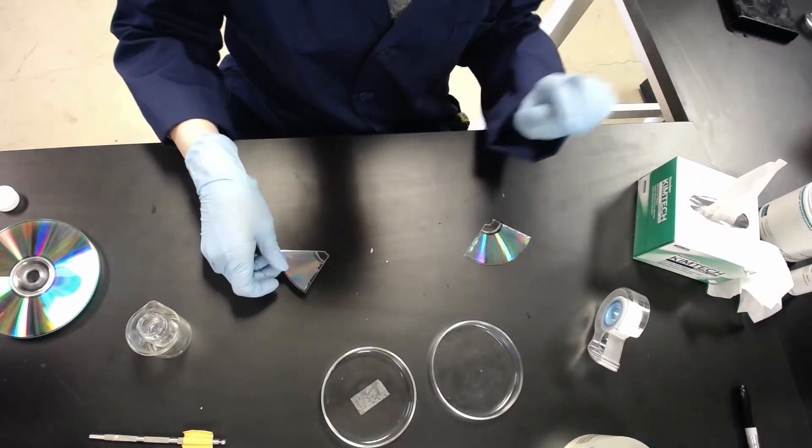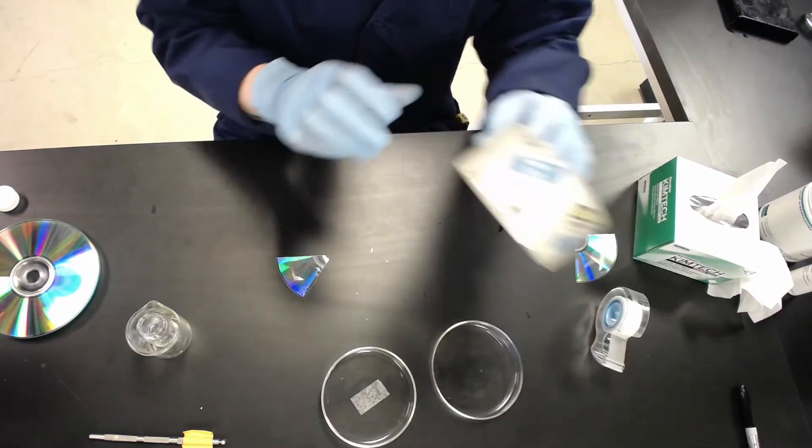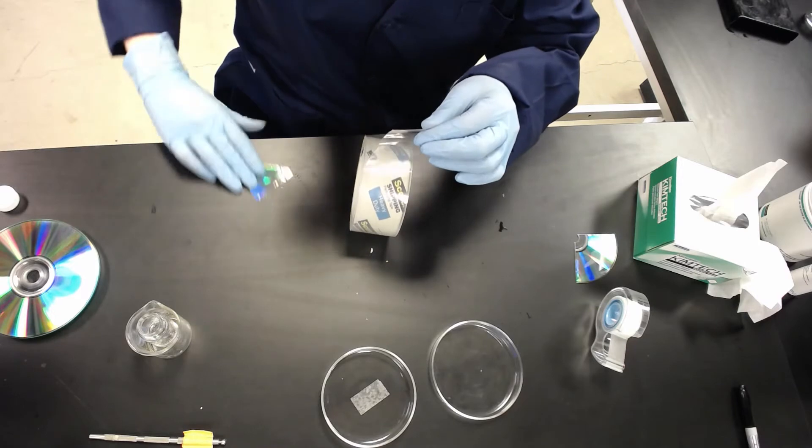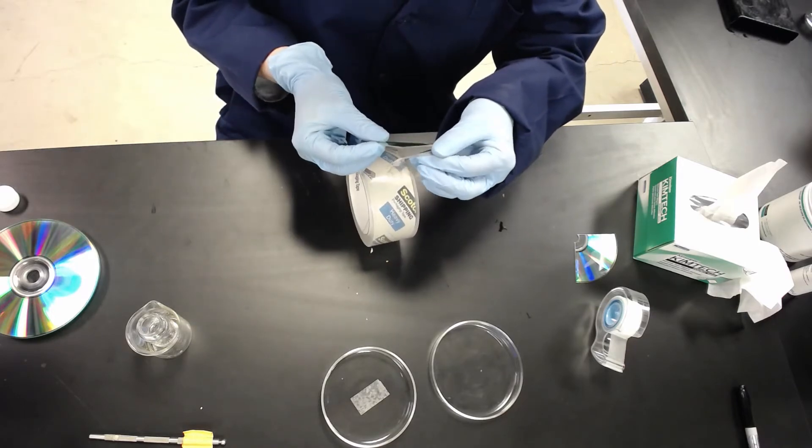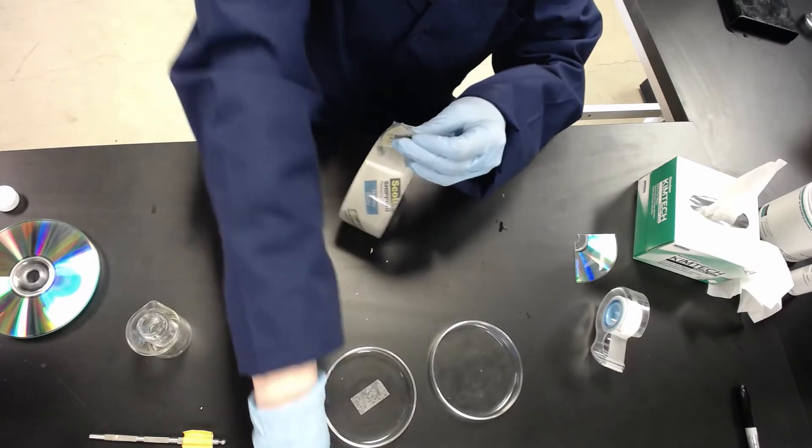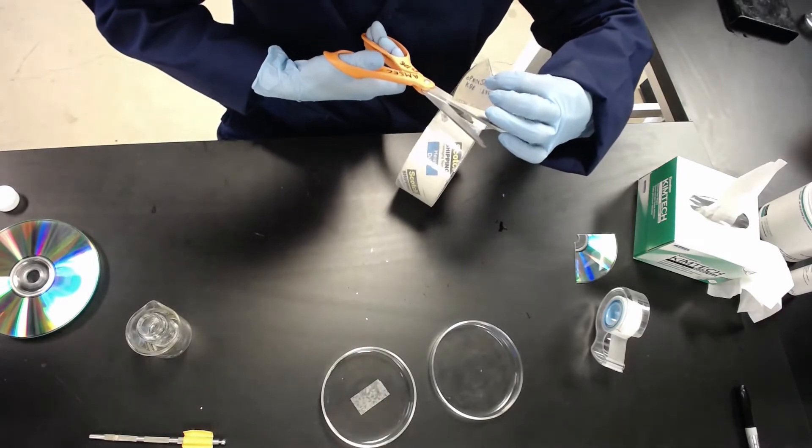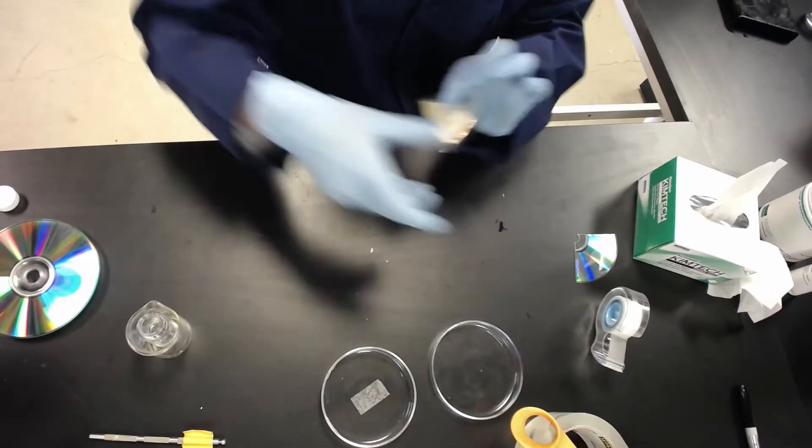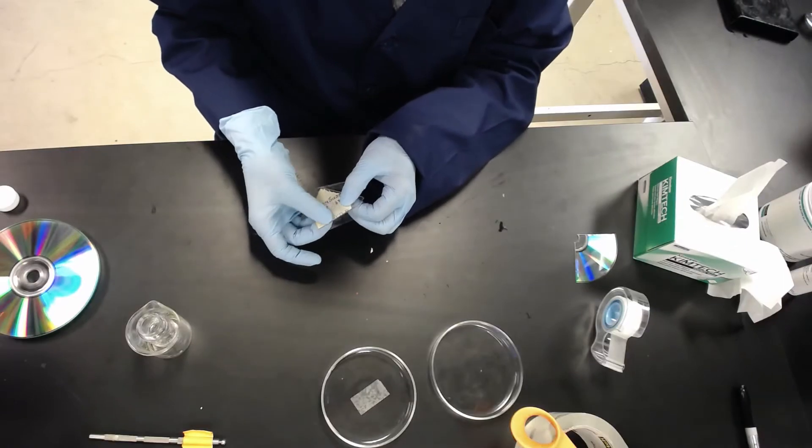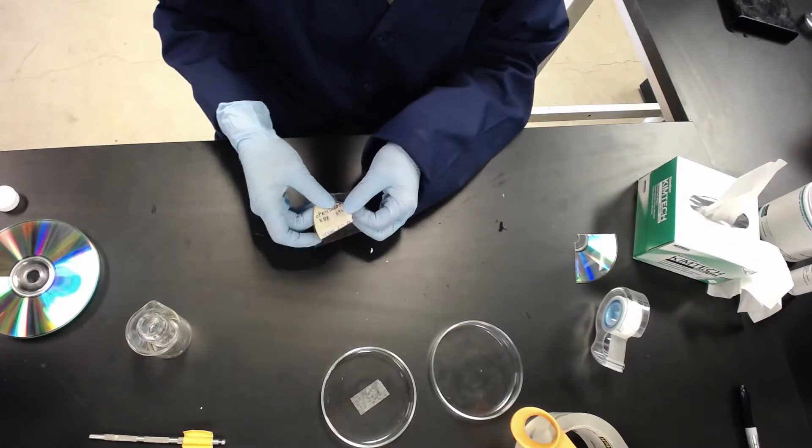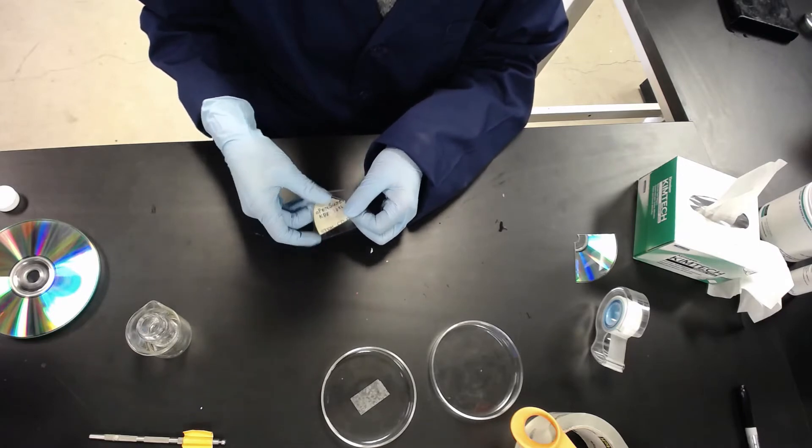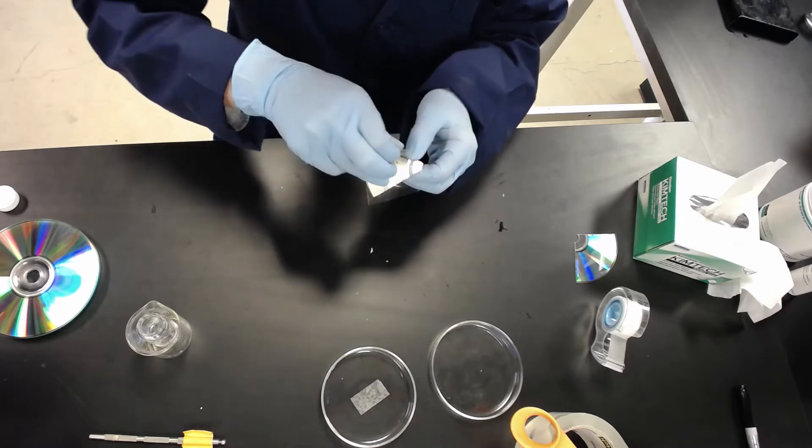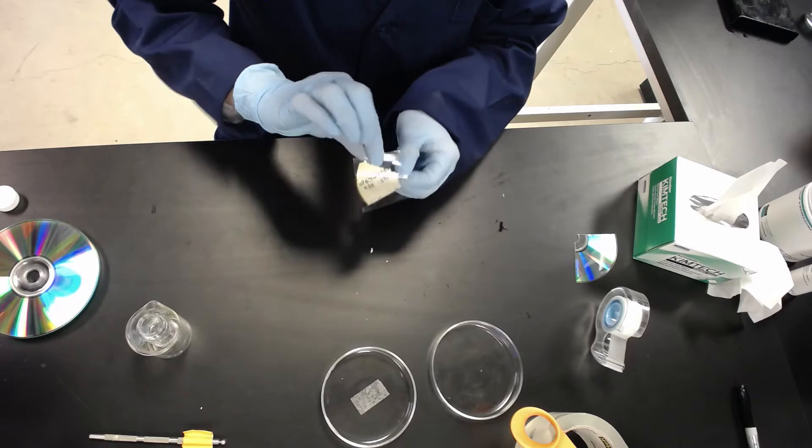So now we're going to remove the aluminum with some tape. I'm putting tape side down—obviously that's how tape works—and now I'm going to peel off, hopefully, the aluminum.